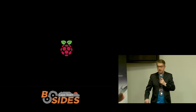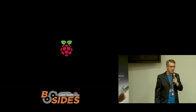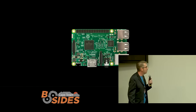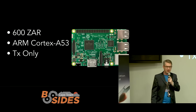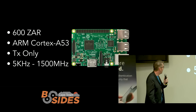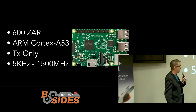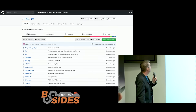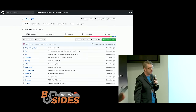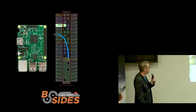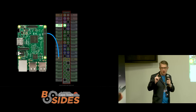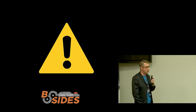Who here has a Raspberry Pi? For those who don't — it's a credit card-sized computer, about 600 Rand, cool little ARM processor. Did you know it's TX-only, as far as I've been able to find out, operating between 5 kHz and 1.5 GHz — which is actually quite impressive. The guy who got this going created something called RPiTX. If you look at your GPIO headers and attach a little lead onto GPIO7 — which I think is used for pulse width modulation on motors — you can use that to broadcast stuff.